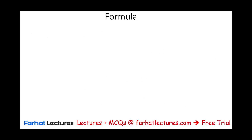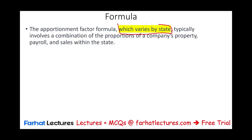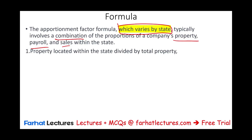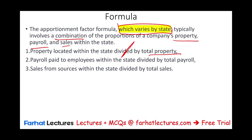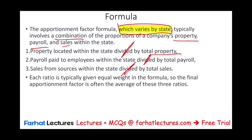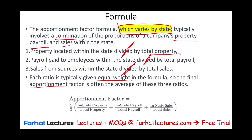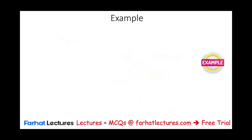The apportionment formula varies by state, but generally involves a combination of property, payroll, and sales within the state. We take property located within that state divided by total property, payroll paid within that state divided by total payroll, and sales from sources within that state divided by total sales, then take the average of the three ratios. Each ratio is given equal weight, so the final apportionment factor is the average — divide by three.